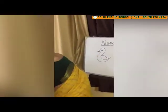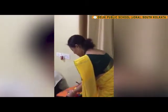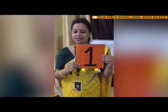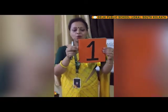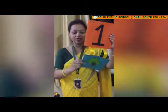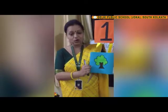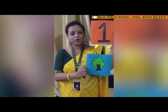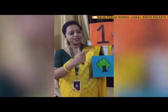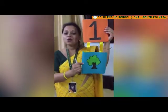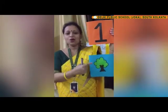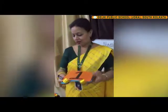Now let us see here. Now tell me which number is this? Yes, this is also number one. And let us see what is there. It is a tree. How many trees are there? One tree. This is number one. And here there is one tree. One, one tree. Now let us go to the next number.